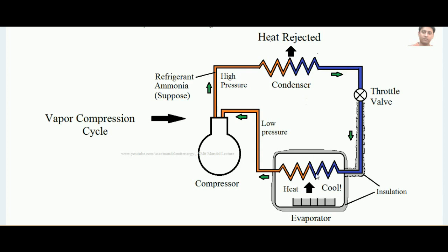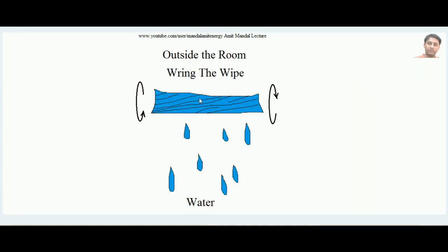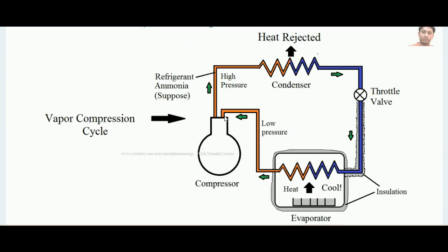The refrigerant absorbs the heat from the room or system and then goes inside the compressor. Before going into the compressor, it is at low pressure — same as an untwisted wipe. When we want to remove water, we twist the wipe so it is pressurized. Similarly, the refrigerant absorbs heat in the evaporator, goes inside the compressor, and the compressor raises the pressure.